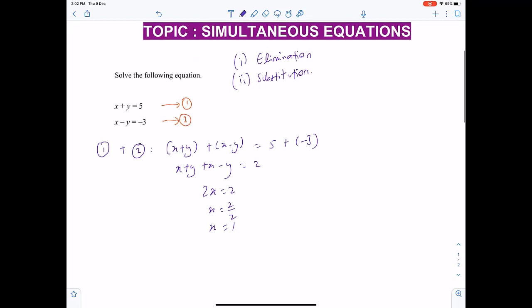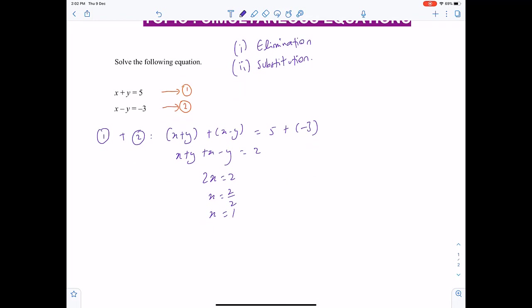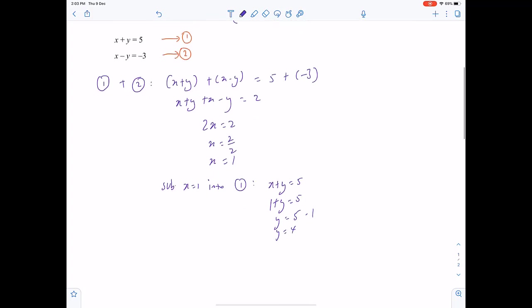Once we get the value of x, we can proceed to find y. We substitute x equals 1 into any of the equations - you can use equation 1 or equation 2. X plus y equals 5, so 1 plus y equals 5, and y will be 5 minus 1, which is 4.